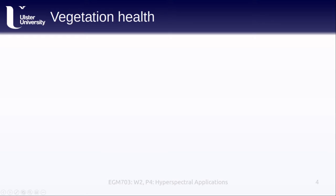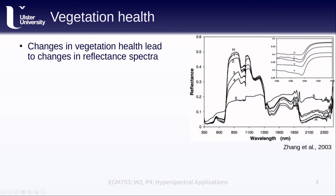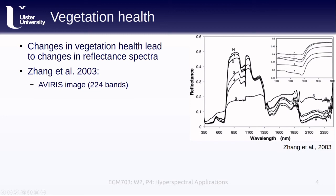Another important application of hyperspectral remote sensing and of remote sensing more generally is in monitoring crop and vegetation health. Changes in vegetation health lead to changes in reflectance spectra for plants. For example, we have a number of different spectral signatures here showing different stages of health and disease for tomato plants, taken from a 2003 paper by Zhang and others. The curve marked H shows the reflectance for a healthy tomato plant, while the curves marked one through four show the reflectance for tomato plants at different stages of late blight disease, an infection that can have devastating effects on both tomato and potato crops. The curve marked S shows the average reflectance curve for the soil in the study area. This study used an AVIRIS image — a sensor with 224 spectral bands — in order to work on identifying these different stages of disease in tomato crops.